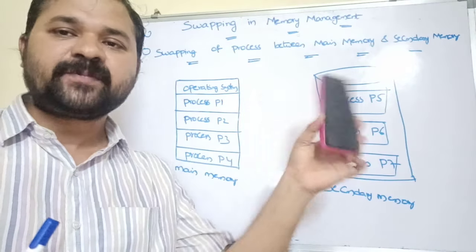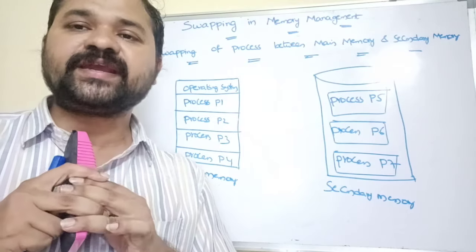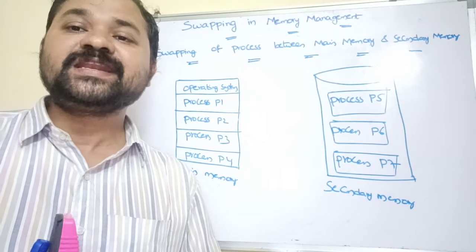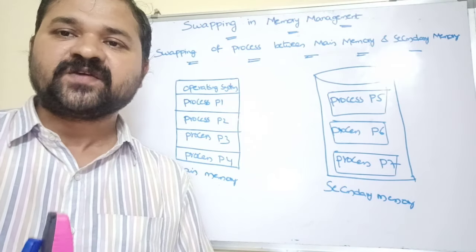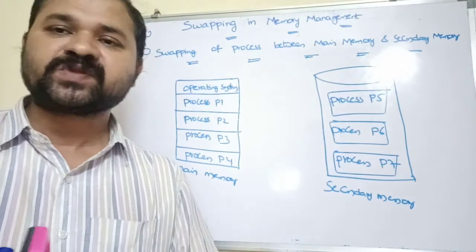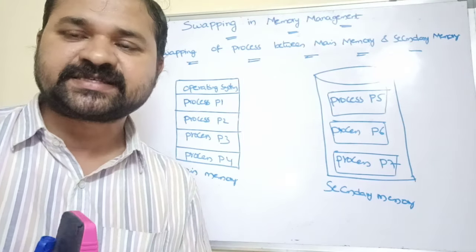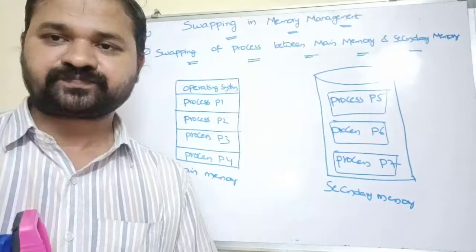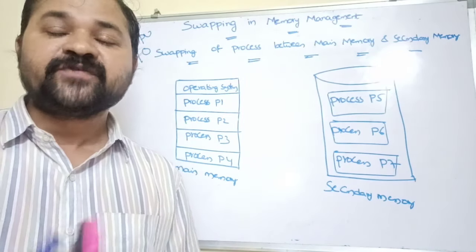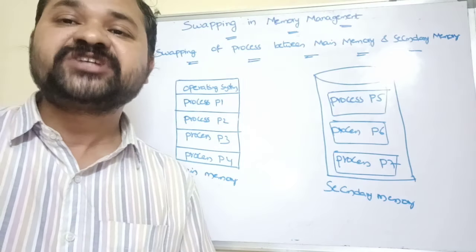Now let's see about swapping in memory management. Swapping is mainly useful in order to implement a multi-programming system. In a multi-programming system, we can store multiple processes in the main memory so that the CPU can execute all those processes in an efficient manner. The major advantage of multi-programming is we can utilize the CPU performance in an efficient manner.